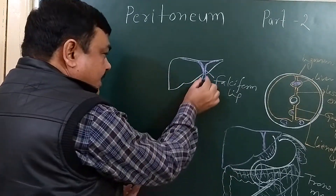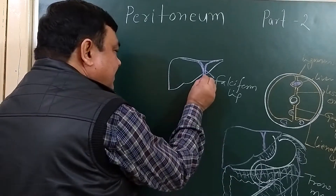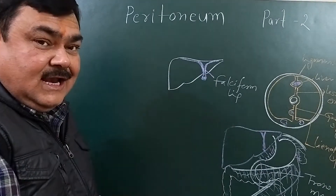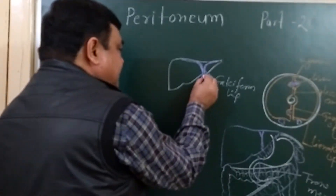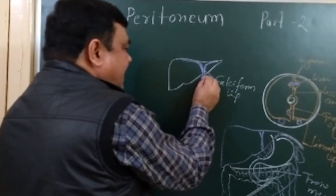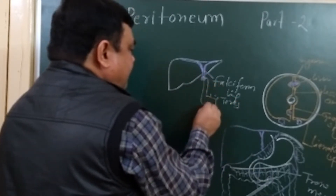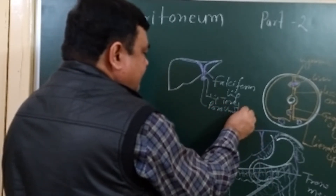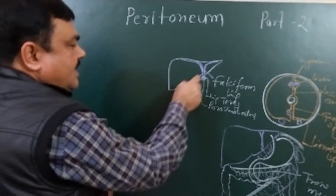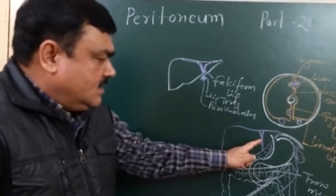Here is the fold of the peritoneum. This fold contains the paraumbilical vein and the obliterated left umbilical vein — that is the ligamentum teres. So this fold contains ligamentum teres and paraumbilical vein. This falciform ligament is the fold of the peritoneum.